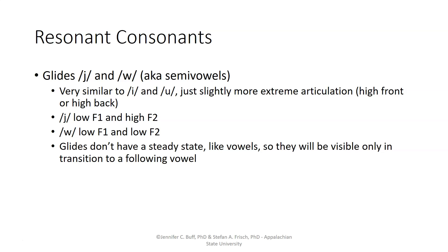For the glides Y and W, sometimes also called semivowels, they are acoustically very similar to E and U, with slightly more extreme articulations — high front or high back — that are briefer and more transitional. So for Y, we would expect to see a low F1 and a high F2, like for a high front vowel. And for W, we would expect to see a low F1 and a low F2, like for a high back and rounded vowel.